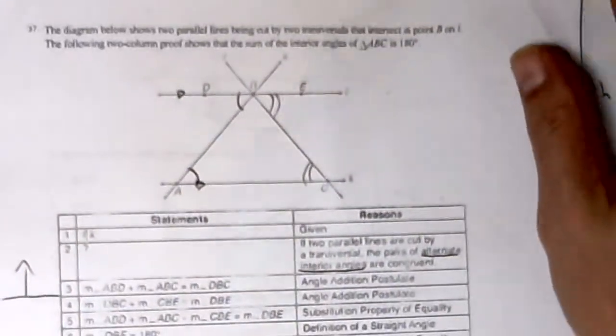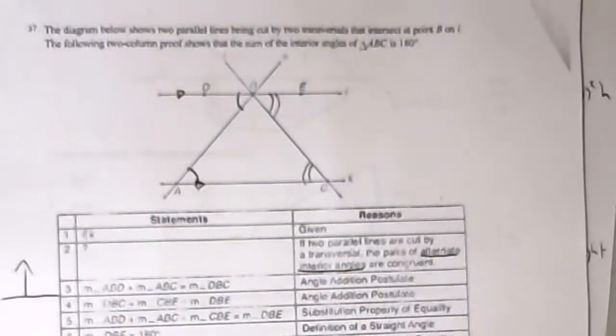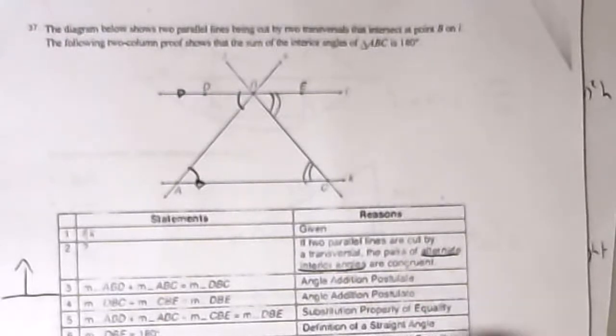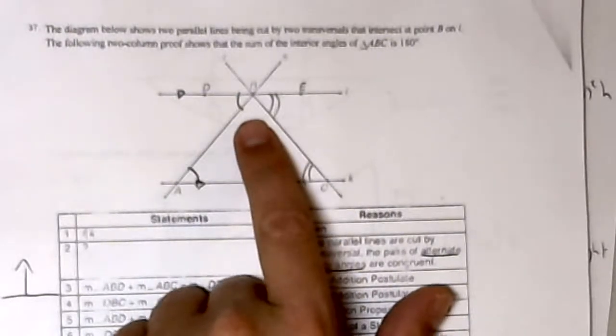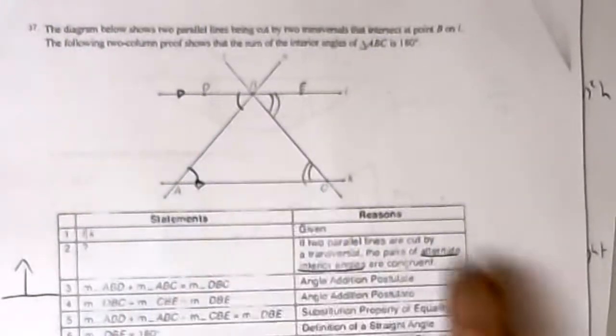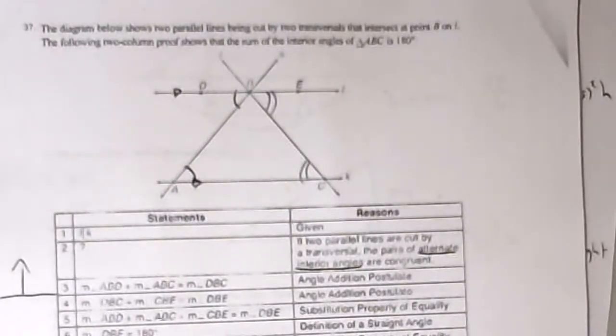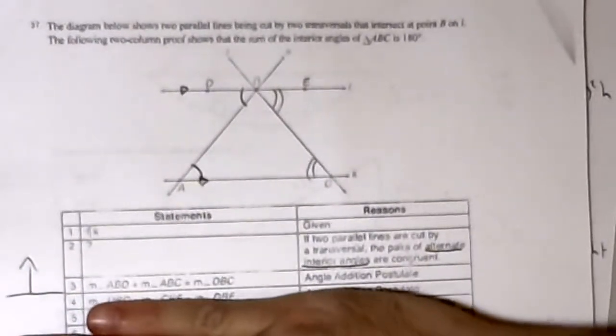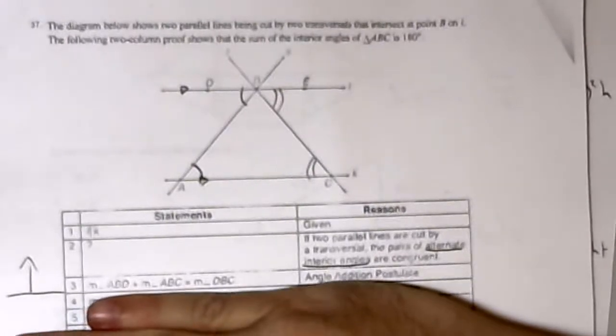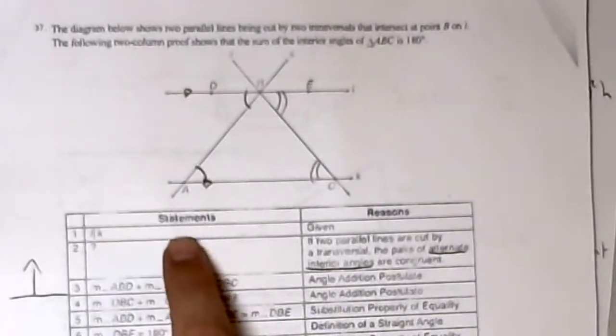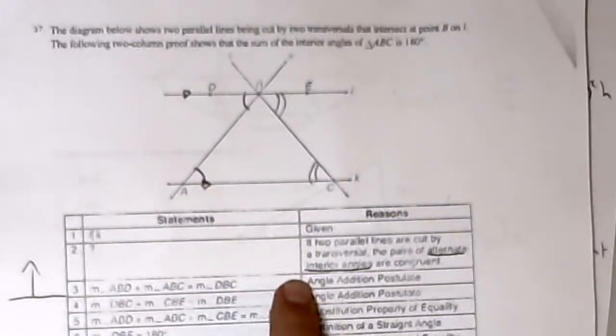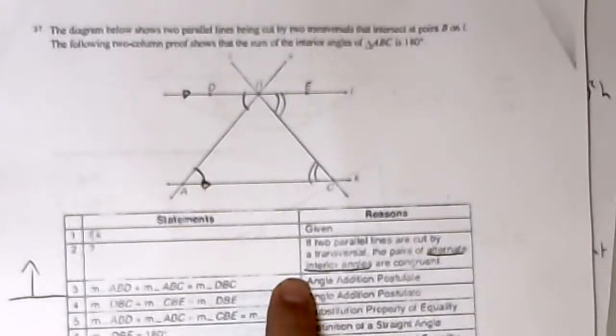We have a figure with two parallel lines and two transversals. We want to show the sum of the interior angles of triangle ABC is 180. Basically, the question mark is here. I am going to effectively ignore everything else. F and K is given. If two parallels are cut by a transversal, the pairs of alternate interior angles are congruent.